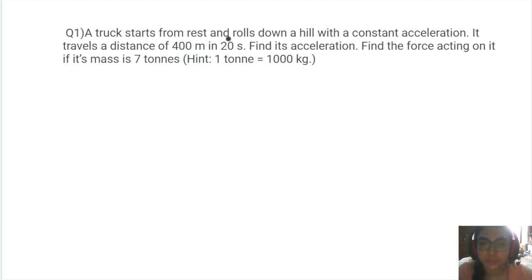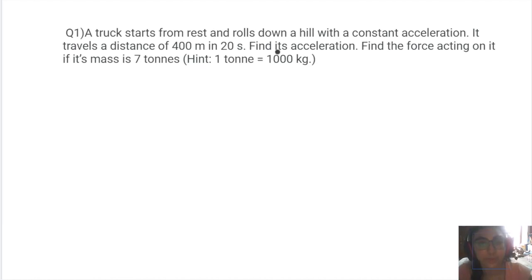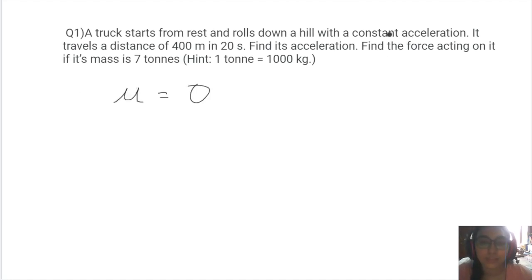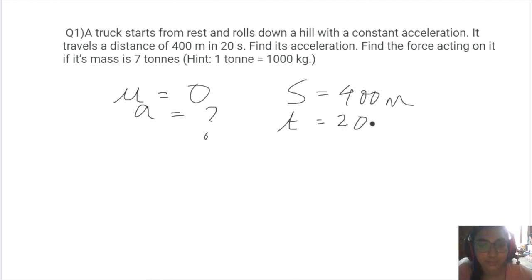First problem: a truck starts from rest and rolls down a hill with constant acceleration. It travels a distance of 400 meters in 20 seconds. Find its acceleration and the force acting on it if its mass is seven tons. Note: one ton equals 1000 kg, so seven tons is 7000 kg. Let's write down the known values — initial velocity is zero, s = 400 m, t = 20 s, mass = 7000 kg.